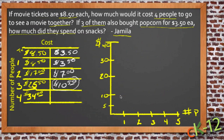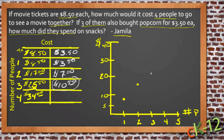We'll represent this with a graph. I'm going to take the information we have and put it onto two different lines on this graph. We'll stick with the color convention and use yellow for the cost of the tickets. If one person buys a ticket at $8.50, that's a point right here. Two people buying tickets is $17, three people is about $25, and four people is almost $34.50. You can see that forms a pretty straight line on our graph.